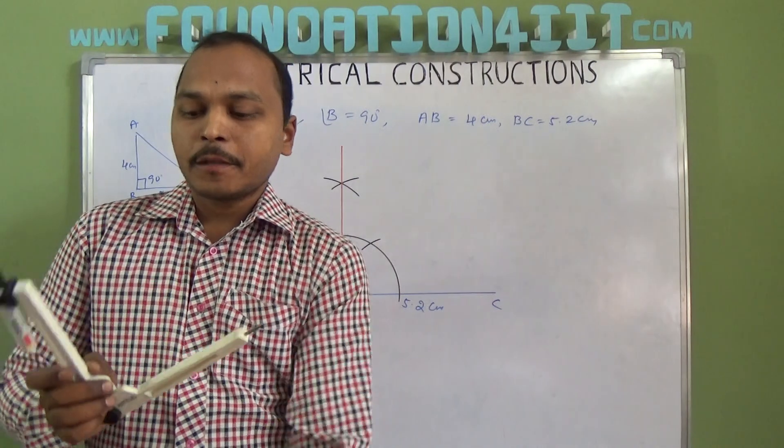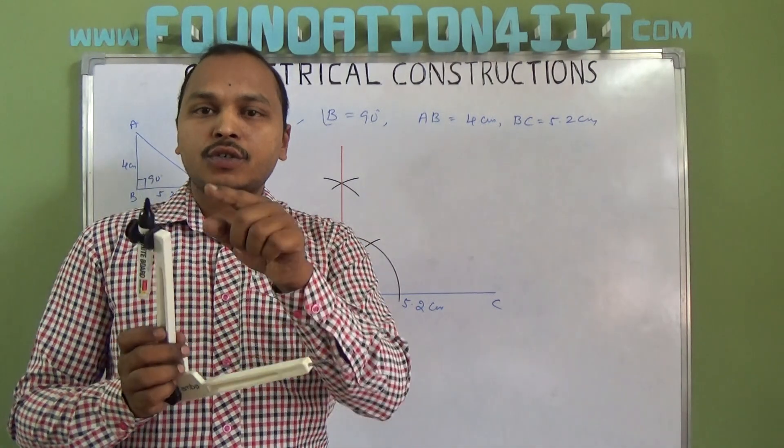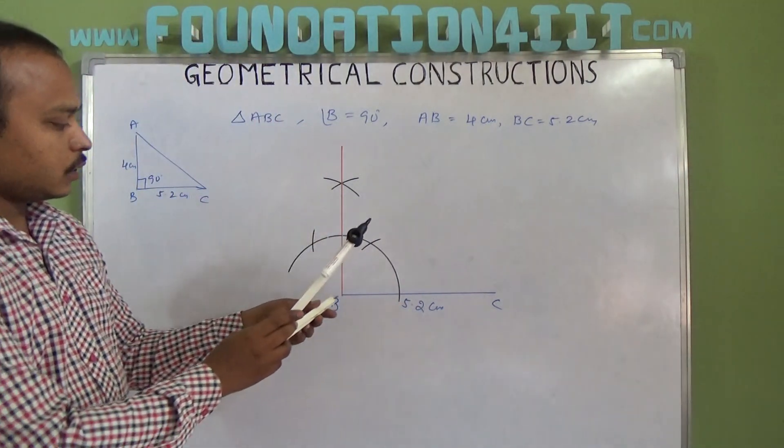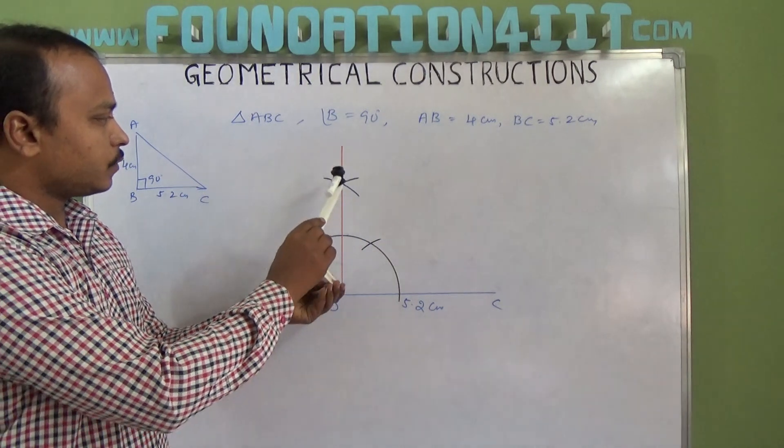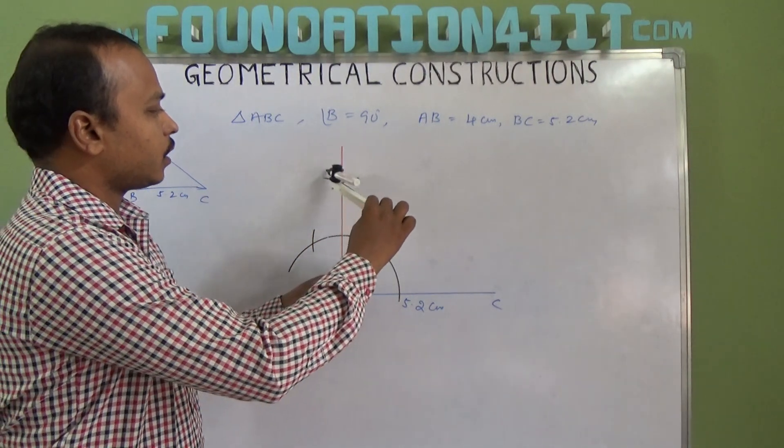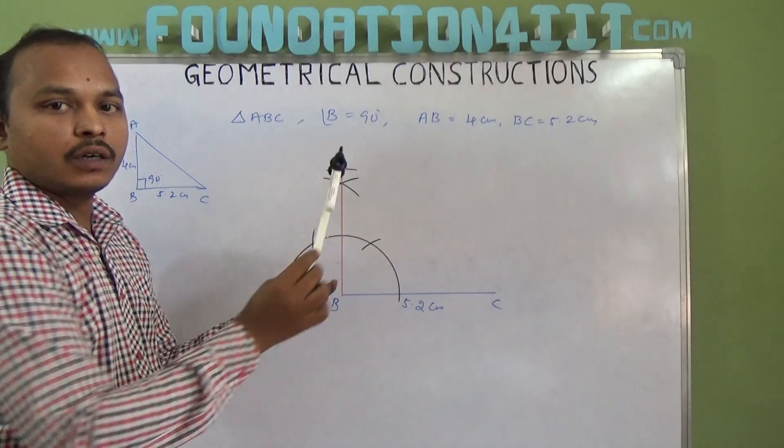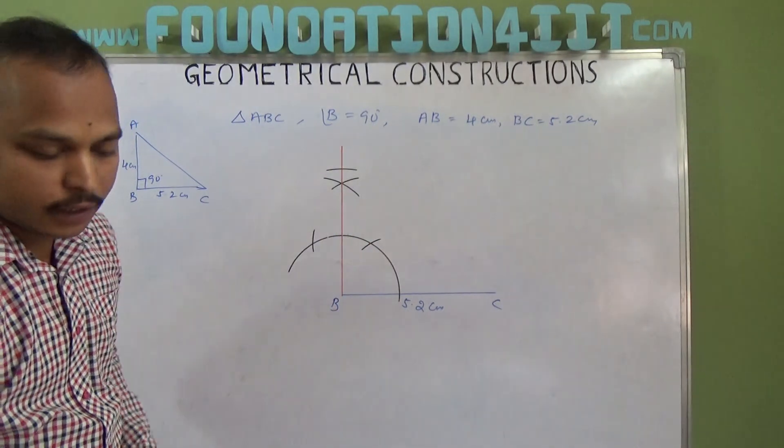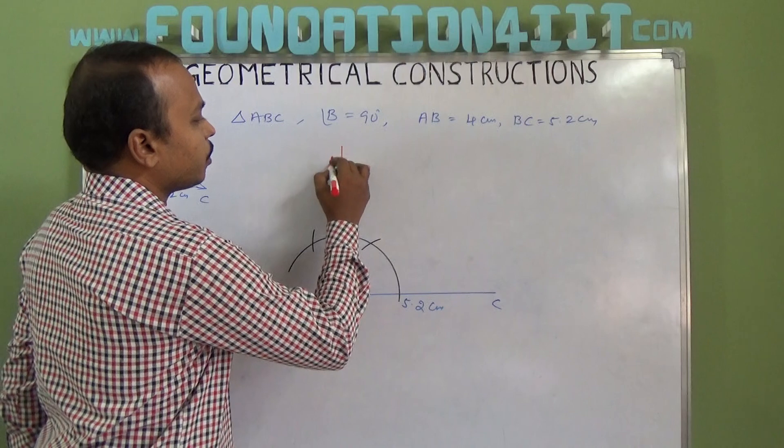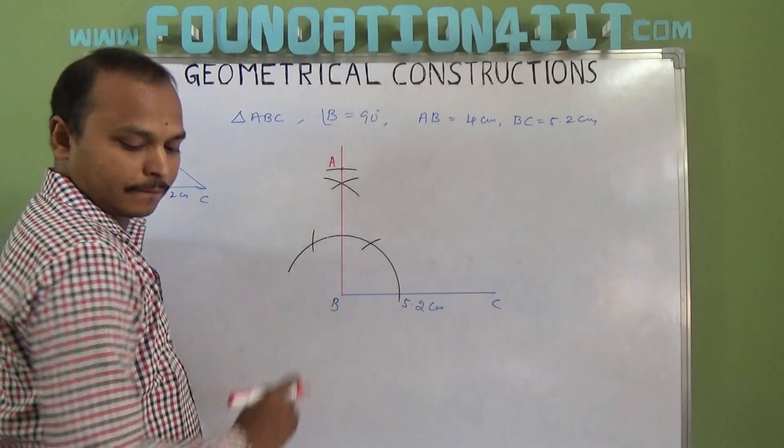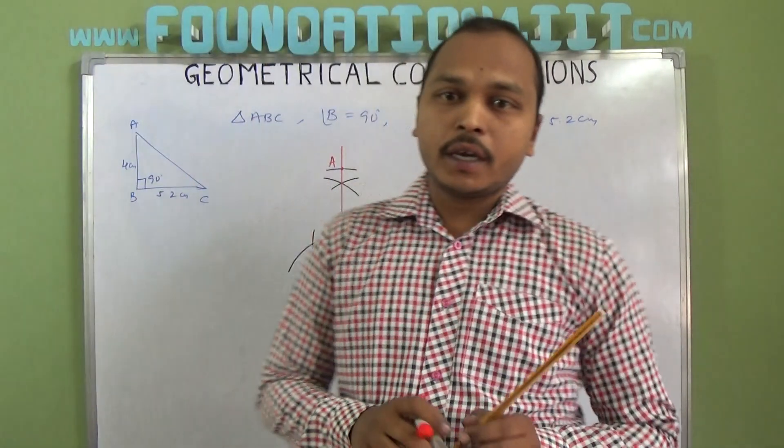From B at 4 centimeters, cut the arc on the line. Where it touches, there is point A. That's it. Now join A and C.